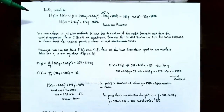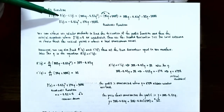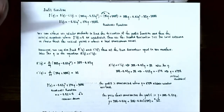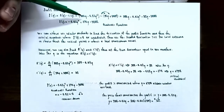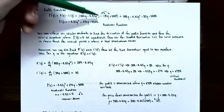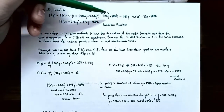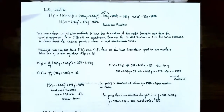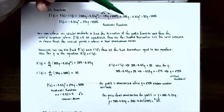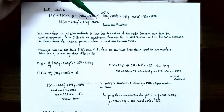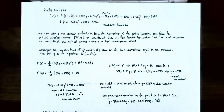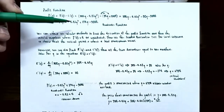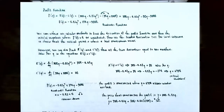Now that we know the revenue and cost functions, we can find the profit function. P(q) = R(q) − C(q) = (300q − 0.02q²) − (30q + 9,000). The negative sign distributes to both terms in the cost function, giving: 300q − 0.02q² − 30q − 9,000. Combining like terms, the profit function is P(q) = −0.02q² + 270q − 9,000.